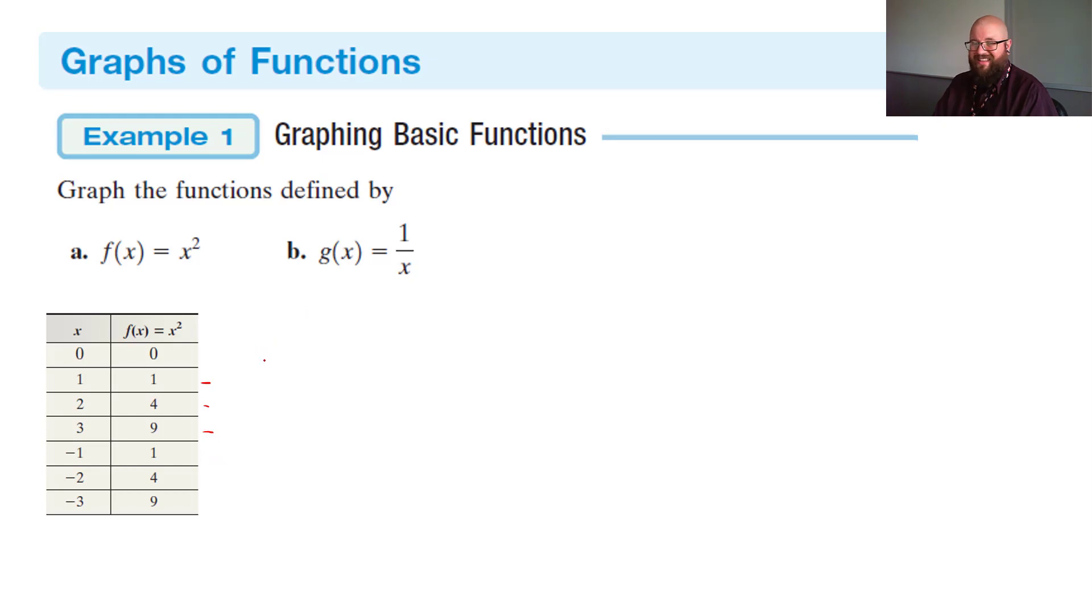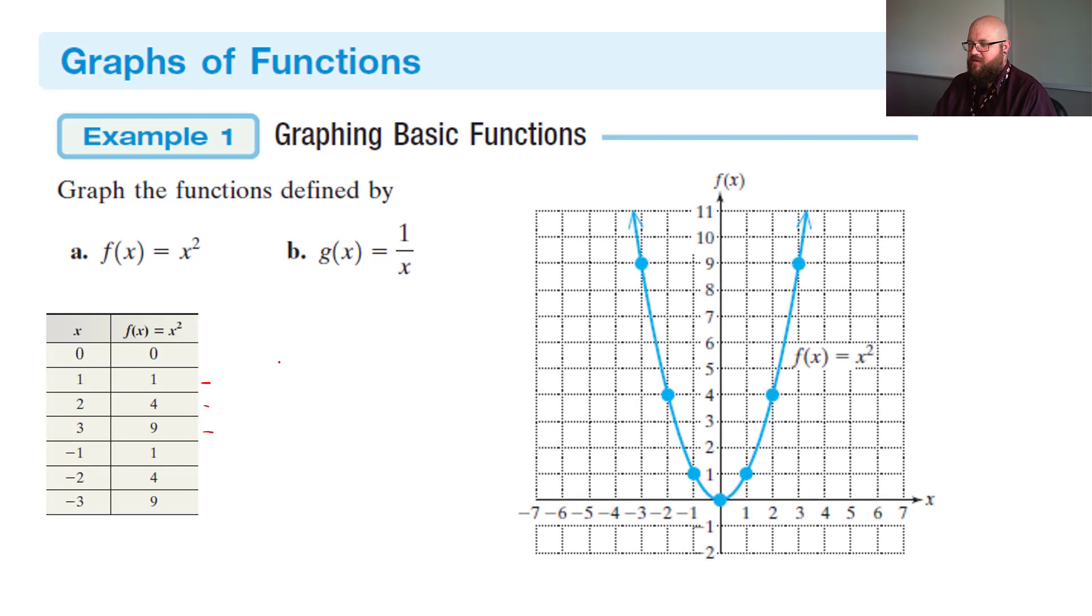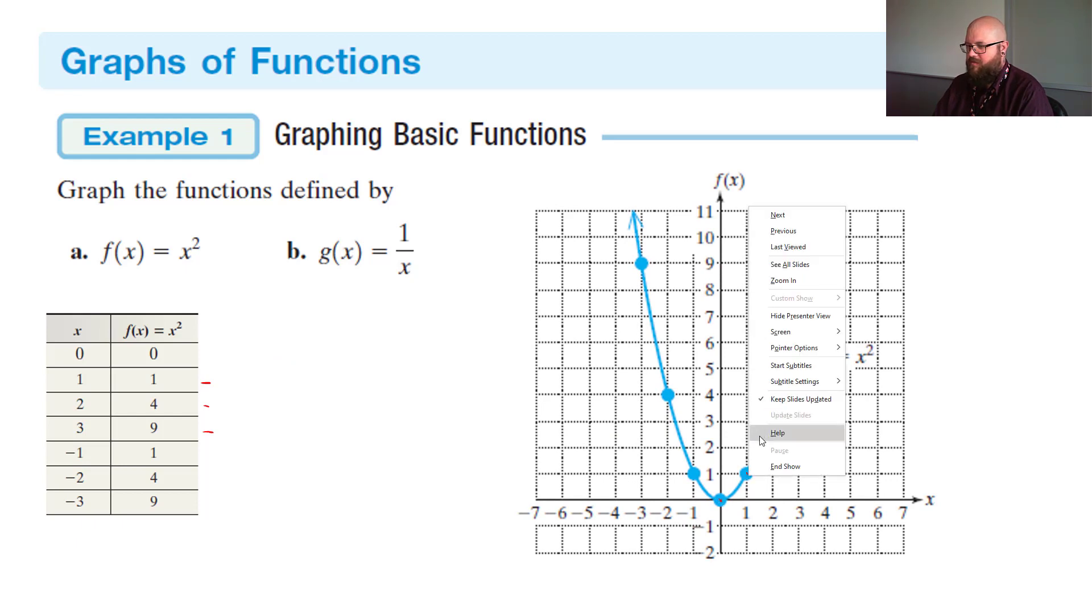So to plot these then, I can simply put these on a graph and see how this draws out. As you can see here, we have (0,0) right down here. Then we went over to (1,1), (2,4), (3,9).